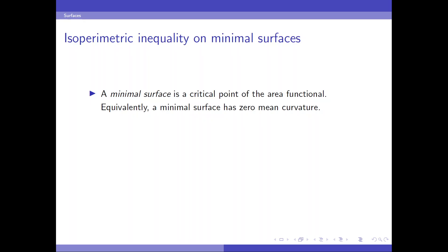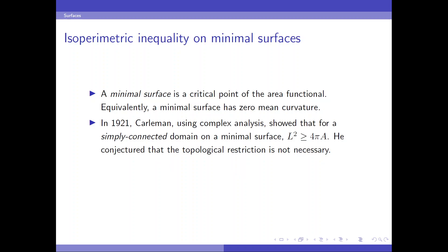Another isoperimetric inequality that interests people is the case of minimal surfaces. Recall that a minimal surface is a critical point of the area functional. Equivalently, a minimal surface has zero mean curvature. In 1921, Carleman, using complex analysis and Weierstrass's representation for minimal surfaces, showed that for a simply connected domain on a minimal surface, the classical isoperimetric inequality holds. L squared is greater than 4 pi a. He conjectured that the topological restriction is not necessary.